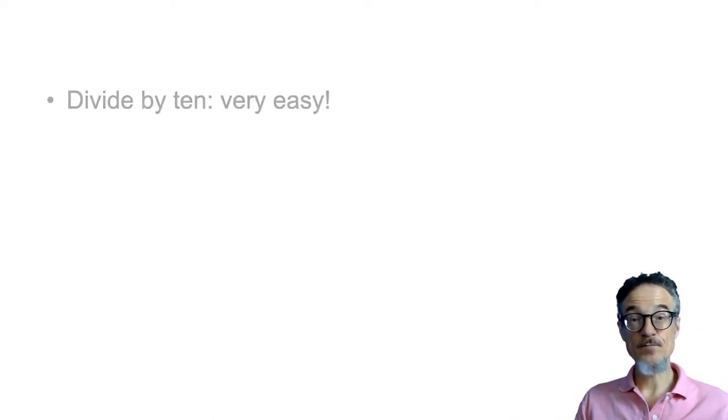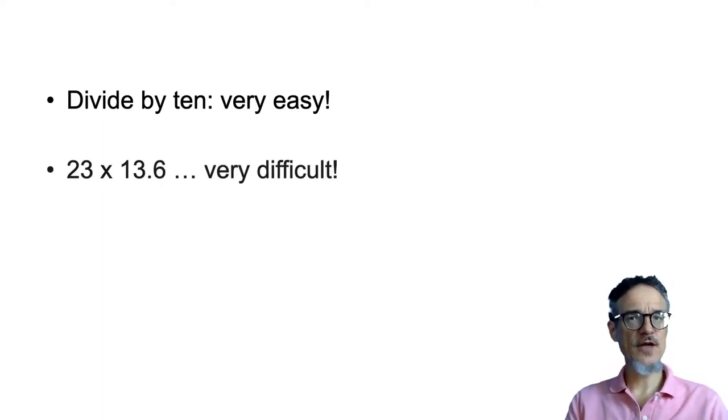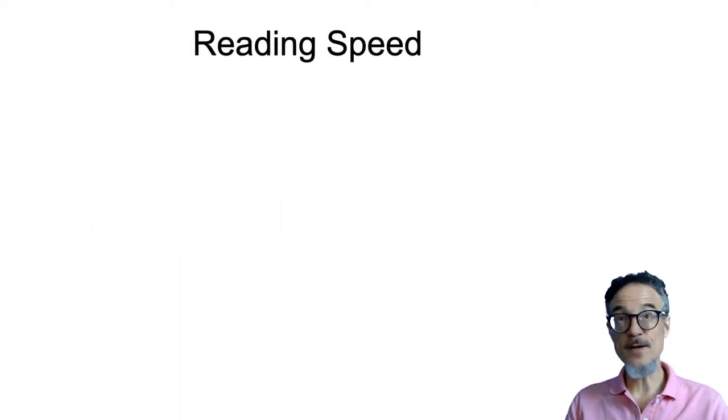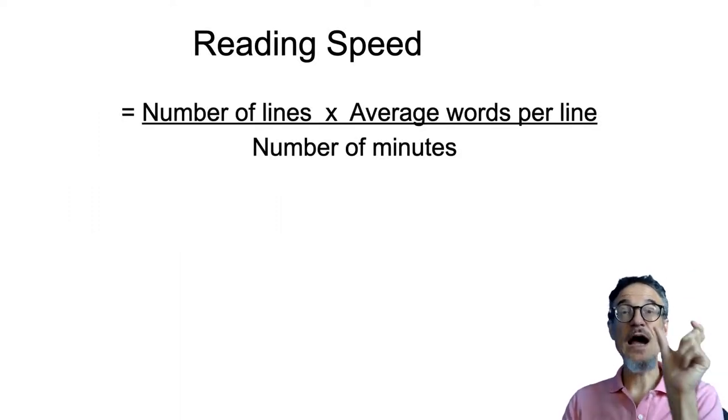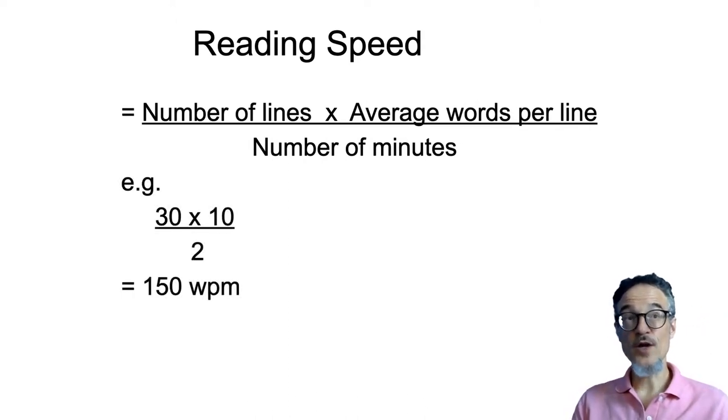Now dividing by 10 is very easy. If you have a calculation like 23 times 13.6, this is a bit more difficult. And I suggest you use a calculator. You've got one on your computer. You've got one on your phone. This is not a maths lesson at elementary school. So use your calculator. Work out the reading speed, which is the number of lines, average words per line, and number of minutes. Work it all out. And that's your reading speed.